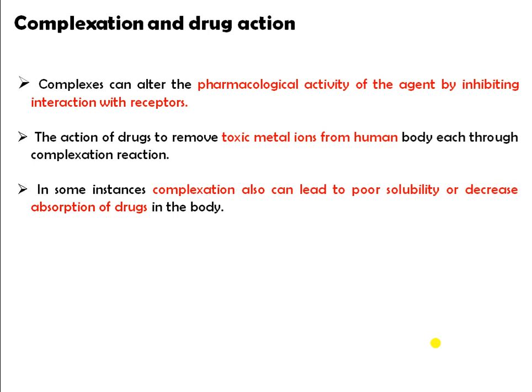Pharmacological activity can be increased or decreased. Another action of drugs is to remove toxic metal ions from the human body through complexation reactions. In cases of metal poisoning, complexing agents are prescribed. These complexing agents have the ability to form a complex with the particular metal, and by using such complexing agents, the metals are removed from the body.